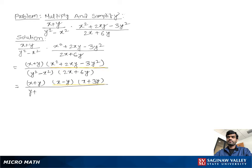For the denominator, we factor y² - x² as (y + x)(y - x), then take out 2 as a common factor from (2x + 6y) to get 2(x + 3y).